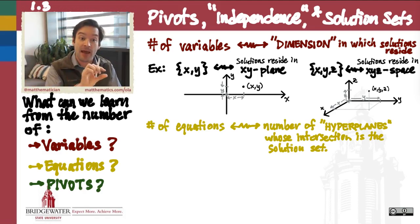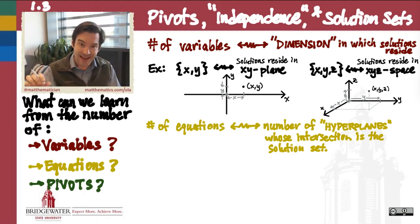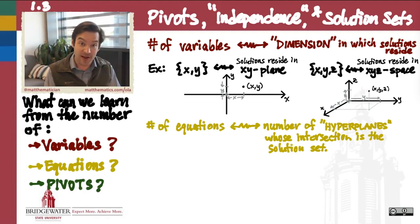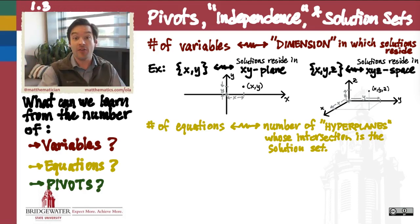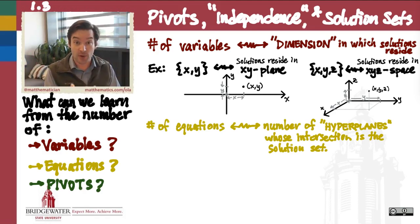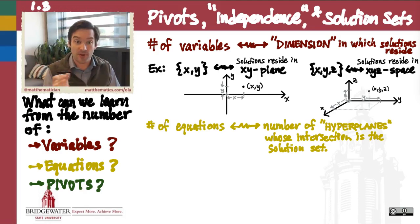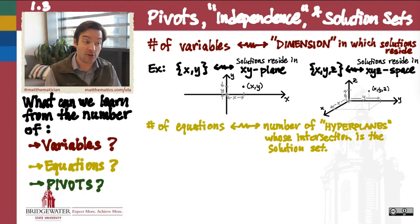Each equation that I write down is going to determine one of those hyperplanes, and if I have multiple equations that all must be satisfied, then the solution of the system is the intersection of all of those hyperplanes corresponding to the equations I wrote down. So each equation determines a hyperplane, and the intersection of all those hyperplanes determines my solution set.